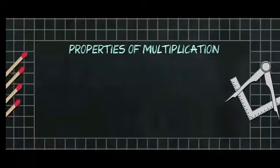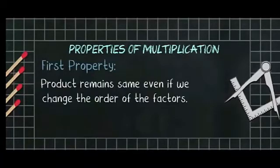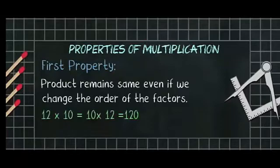Dear students, now we will learn the properties of multiplication. The first property of multiplication is that if we change the order of the factors then product remains the same. For example, 12 into 10 is equal to 10 into 12. The answer is same as 120.